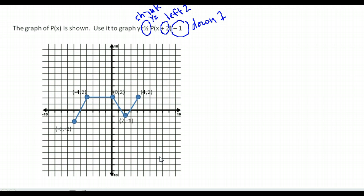Even if you want to do the points individually, some people like to pull the points off and see what happens. Our first point is negative 6, negative 2. We take the y value times one-half — that makes it negative 1. Then move it down 1, which brings us back to negative 2. We also need to shift the x values to the left 2, which puts that point here. Next, at negative 4, 2: multiply y by one-half to get 1, move down 1 to get 0, then move 2 to the left — landing at negative 6, 0.